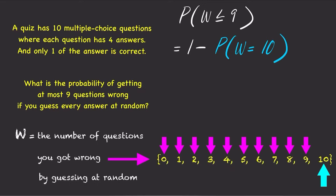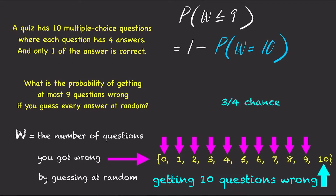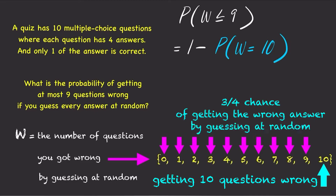And w equals 10 means getting all questions wrong. In other words, you got the wrong answer for all 10 questions by guessing at random. Note that for each question, you have a 3 out of 4 chance of getting the wrong answer by guessing at random.